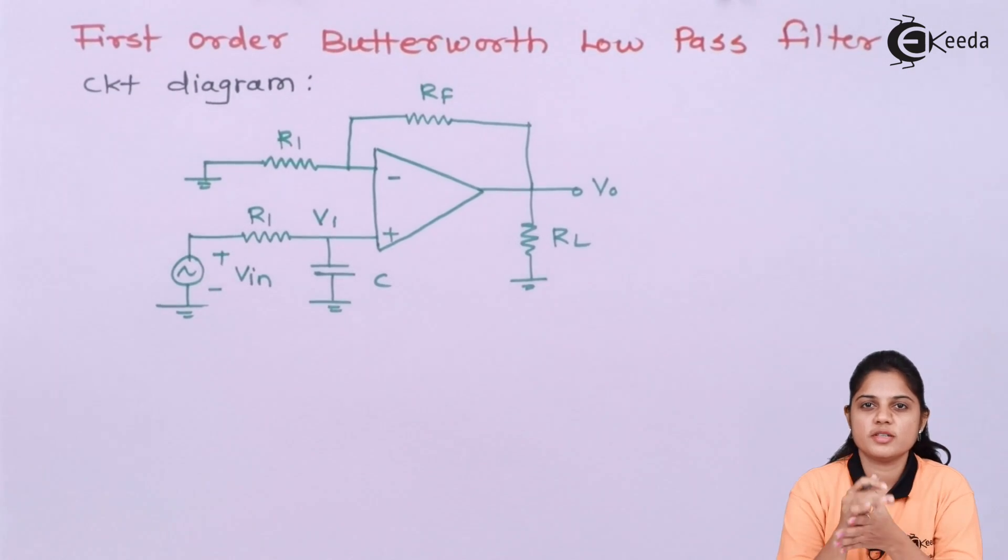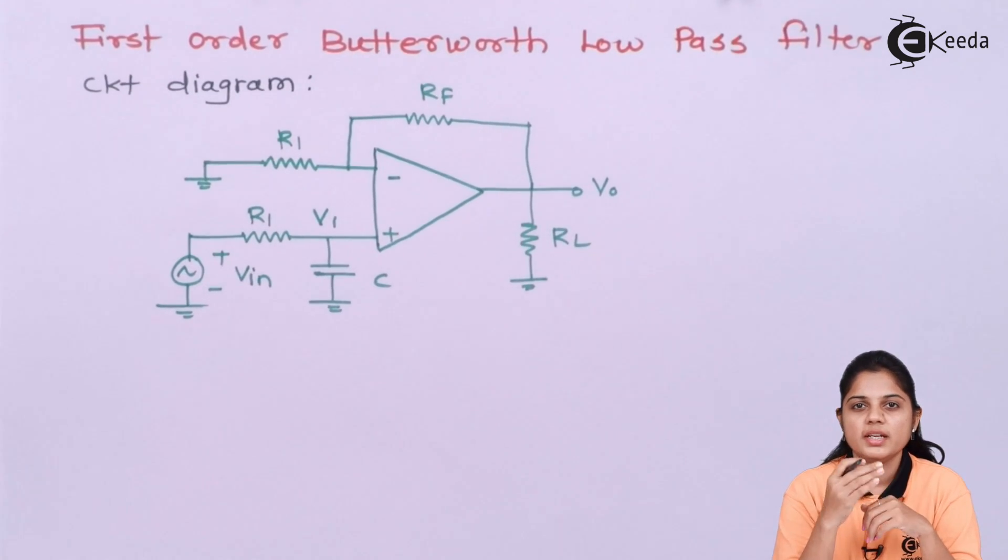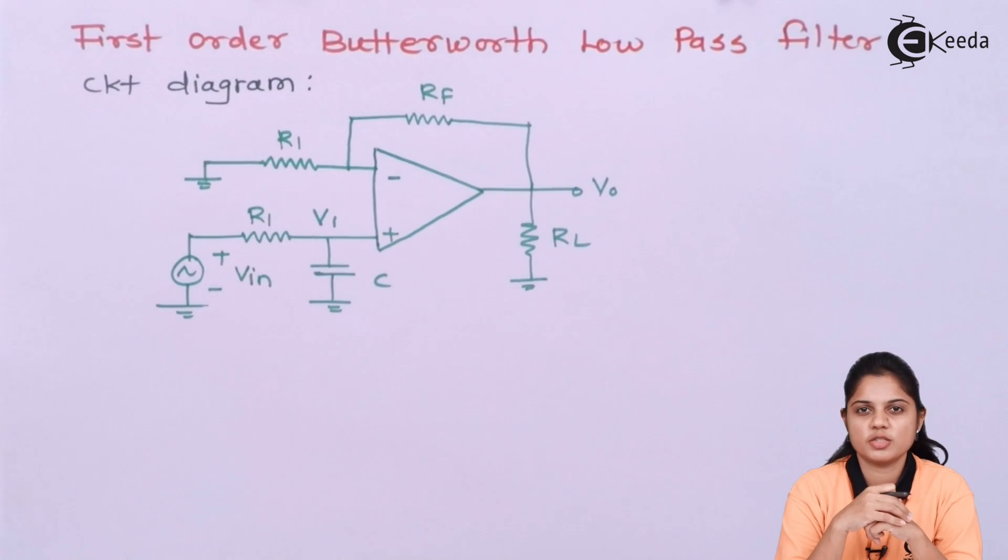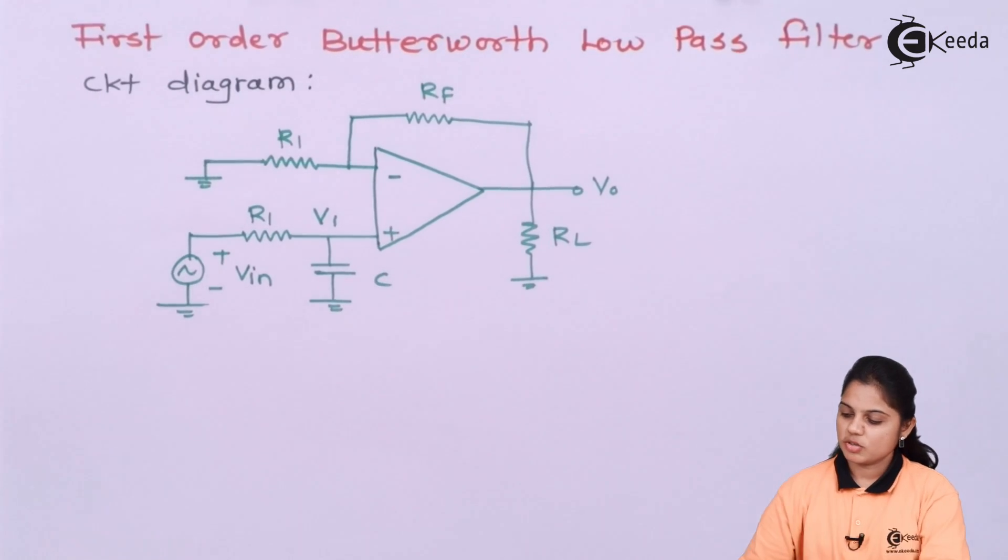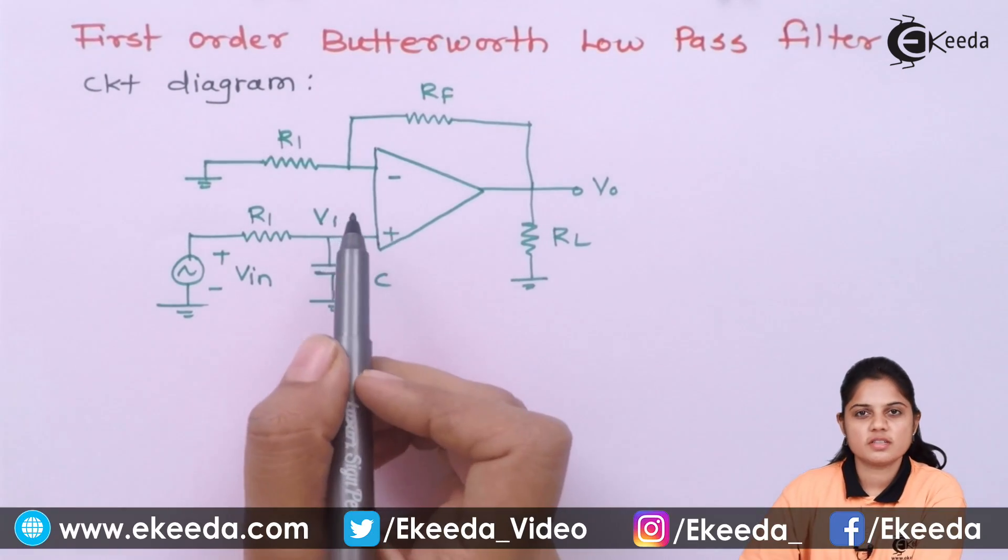Or you can say the filter frequency response is nearly comes, we can bring the frequency response of a filter nearly to the ideal frequency response. That is what is stated by the Butterworth. So that particular filter, the name is given as a Butterworth low pass filter. That is not our concern. We can start with the circuit diagram.